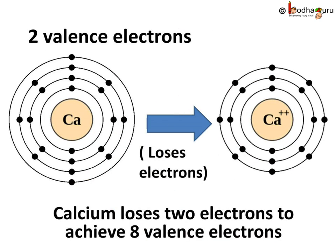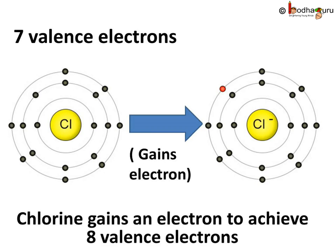As we saw, calcium gives away 2 electrons from the outermost shell and forms a cation to achieve 8 valence electrons. Thus, by giving away 2 valence electrons, calcium has achieved a full outer shell of 8 electrons. And chlorine, which has 7 valence electrons, gains an electron in the outermost shell and forms an anion to achieve 8 valence electrons.